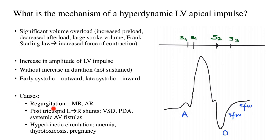What are the various causes? Regurgitant lesions like mitral regurgitation or aortic regurgitation lead to volume overload — that is an important cause. Post-tricuspid left-to-right shunts like VSD, PDA, or systemic AV fistulas lead to volume overload of the left atrium and left ventricle. A pre-tricuspid shunt like an ASD will also lead to a hyperdynamic impulse, but it will be a right ventricular impulse, not an LV impulse. Can we get this hyperkinetic impulse in normal people without cardiac lesions? Yes — in cases of hyperkinetic circulation like anemia, thyrotoxicosis, and pregnancy, to name a few.